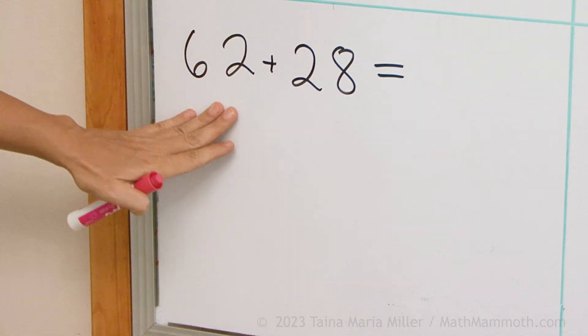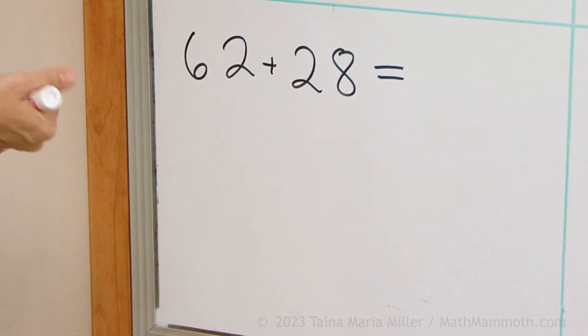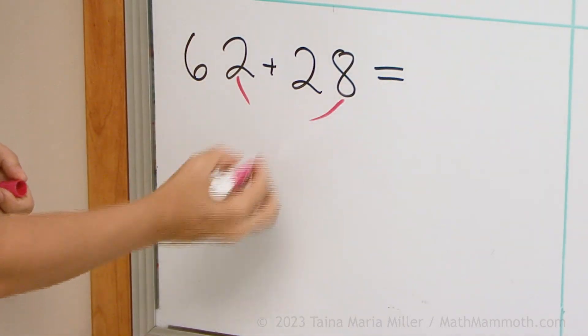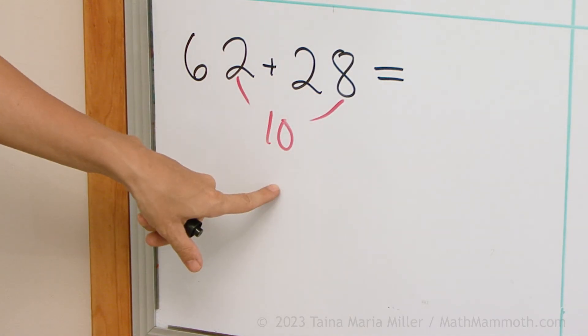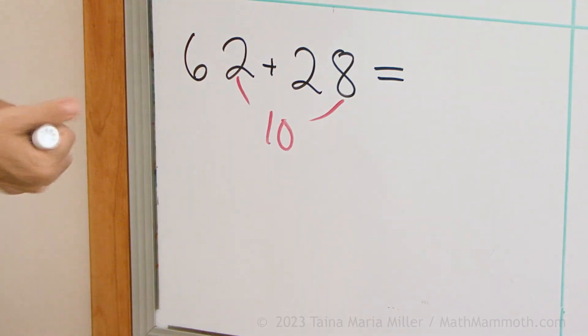What do we get? 62 and 28. Okay. The 2 and 8 makes 10. 60 and 20 and 10. Should be 90, right?